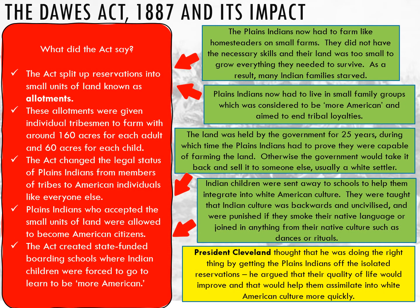Here you have the Dawes Act. What did the Act say? It splits the reservations into small units of land known as allotments. The allotments are given to individual tribesmen to farm — similar to homesteads, around about 160 acres. The Act changed the legal status of the Plains Indians from members of tribes to American individuals, just like everybody else — white Americans, freed slaves — all on a level playing field, so there are no special circumstances for the Indians that had previously existed. Plains Indians who accepted the small units of land are allowed to become American citizens and enjoy the same rights and protections as everybody else.